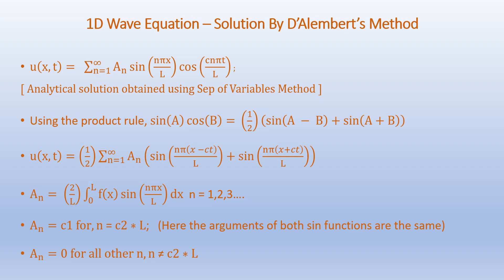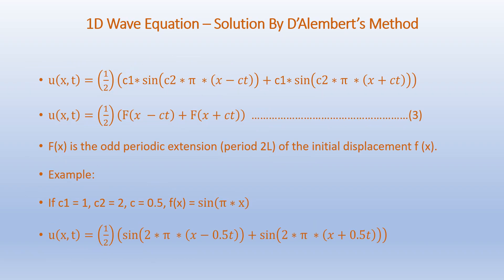As before, An equals C1 for n equals C2 times L since the arguments of both sine functions are the same, and An equals 0 for all other n's. Accordingly, U of X comma T equals half times C1·sin(C2·π·(X−CT)) plus C1·sin(C2·π·(X+CT)). This is of the form U of X comma T equals half of [F(X−CT) + F(X+CT)], where F is the odd periodic extension of period L of the initial displacement F of X. So the solution can be easily obtained directly from the initial displacement F of X.